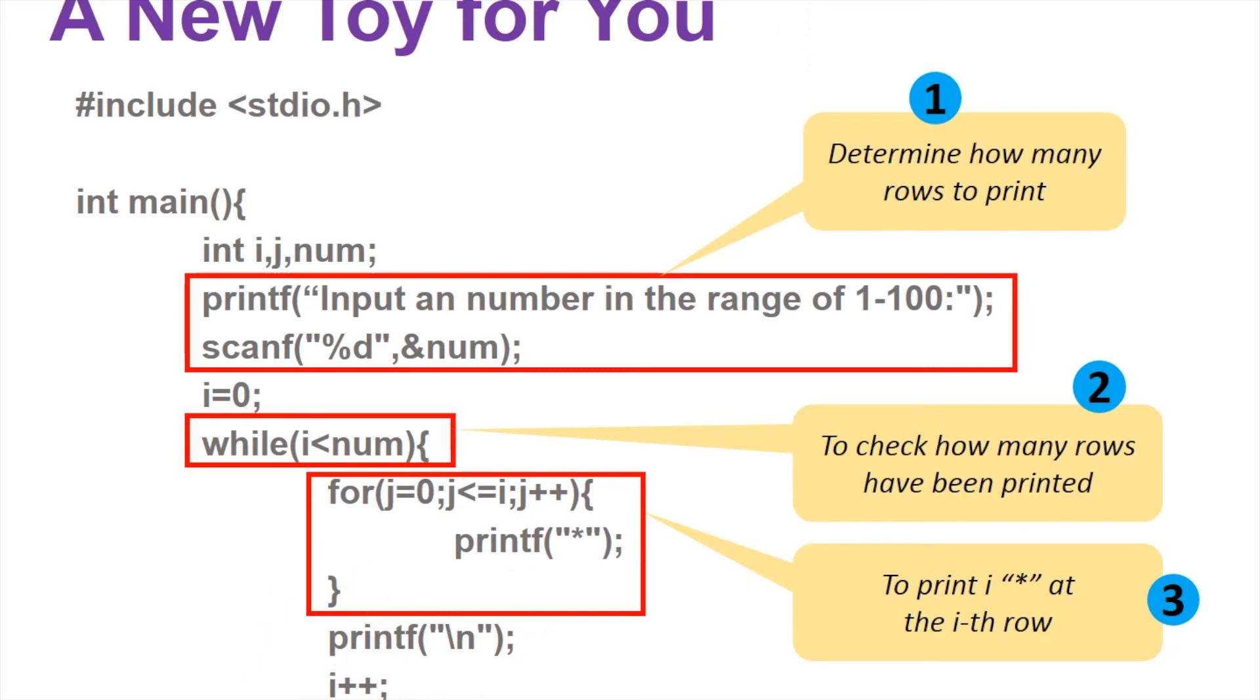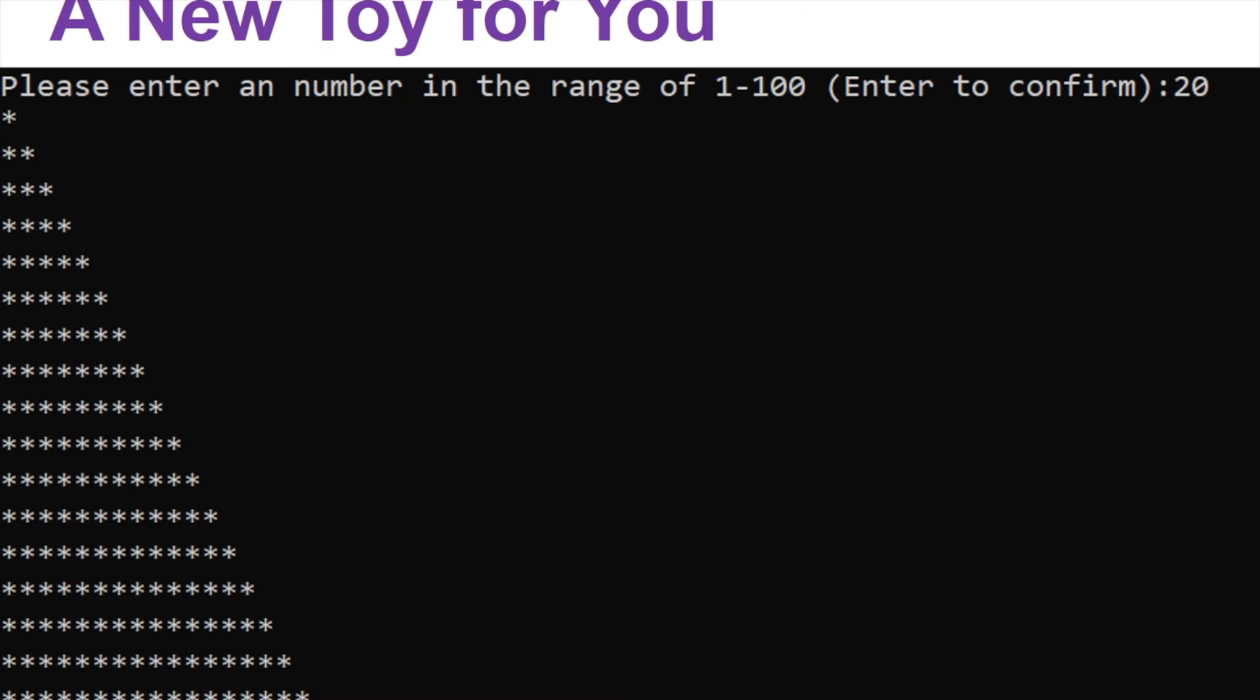So that's what's happening for the toy example. If everything is right, you're supposed to have this as the correct answer for that program.